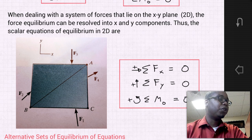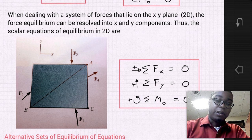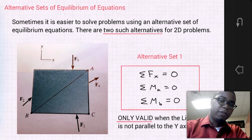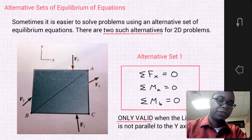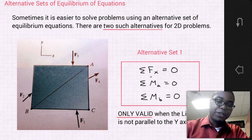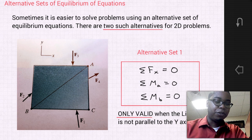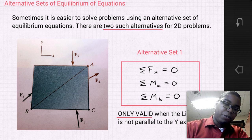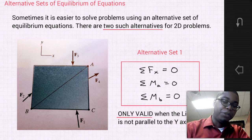However, there are alternative sets of equations that can be used in lieu of Fx, Fy, and M. Sometimes it is easier to solve problems using an alternative set of equilibrium equations. There are two such alternatives for 2D problems. The first alternative set has two moments: the sum of the forces in the x direction equals zero, the sum of the moments at point A equals zero, and the sum of the moments at point B equals zero. This set is only valid when the line AB is not parallel to the y-axis.